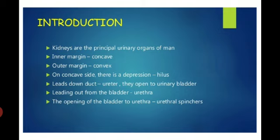The kidneys are the principal urinary organs of man. The inner margin is concave while the outer margin is convex. On the concave side there is a depression known as the hilus. It leads down the duct ureter, which opens to the urinary bladder. Leading out from the bladder is the urethra, which passes the urine outside the body. The opening of the bladder to the urethra is the urethral sphincter.